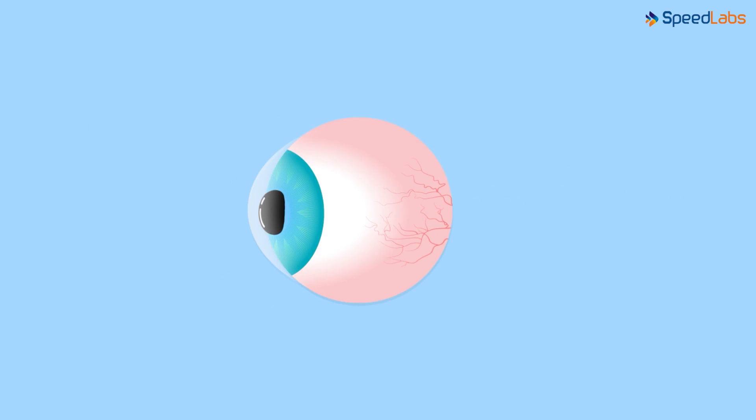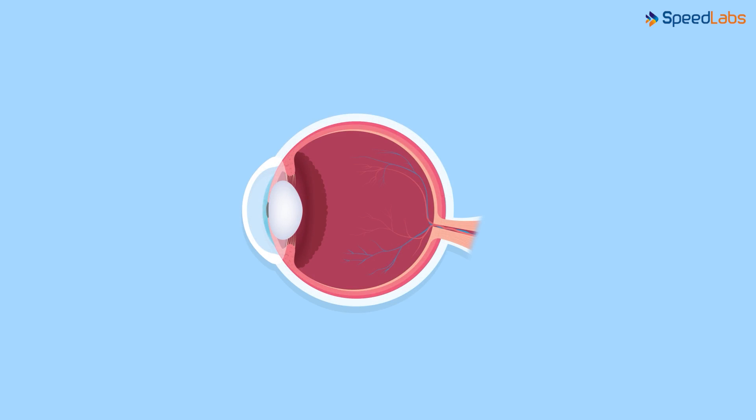The human eye is roughly spherical in shape. What we are going to do in this video is understand the different parts of the eye in short, not in extreme detail. Let's begin.